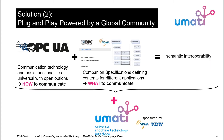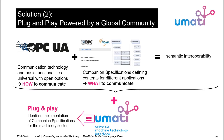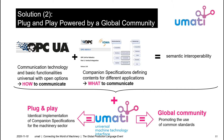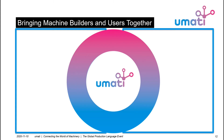UMATI as a Universal Machine Technology Interface is currently sponsored by VDMA and VDW, and it aims at two things. The first is to realize plug and play, meaning we focus on identical implementation of these companion specifications for the machinery sector. The second is building a global community from machine builders, software makers, and all the users who want to use these machines. In other words, UMATI brings machine builders and users together.